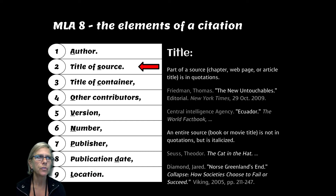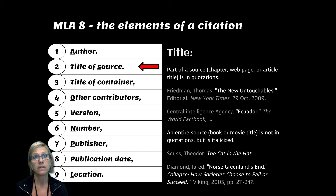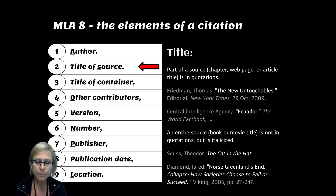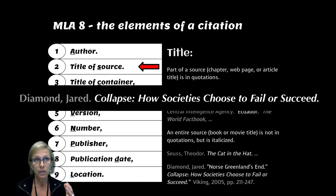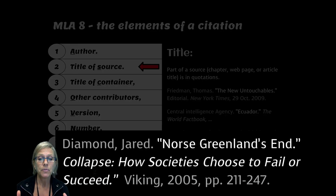For example, if you are using the Jared Diamond book, which most 9th graders use, you are going to use either a chapter of the book, or let's say you are going to read the whole book in preparation for a course. If you are citing the whole thing, you are going to put Collapse: Why Societies Choose to Fail or Succeed in italics. But if you are using only a chapter, you put the chapter — The Norse Greenland's End —